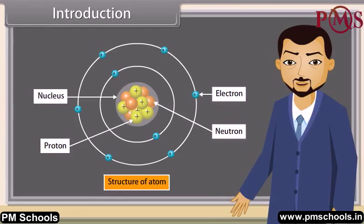Good question, Rakesh. As you know, all objects are made up of different materials like plastic, rubber, iron, etc. They have different arrangements and types of molecules. A molecule is a group of two or more atoms. So the fundamental unit is the atom. Let us discuss more about atoms.